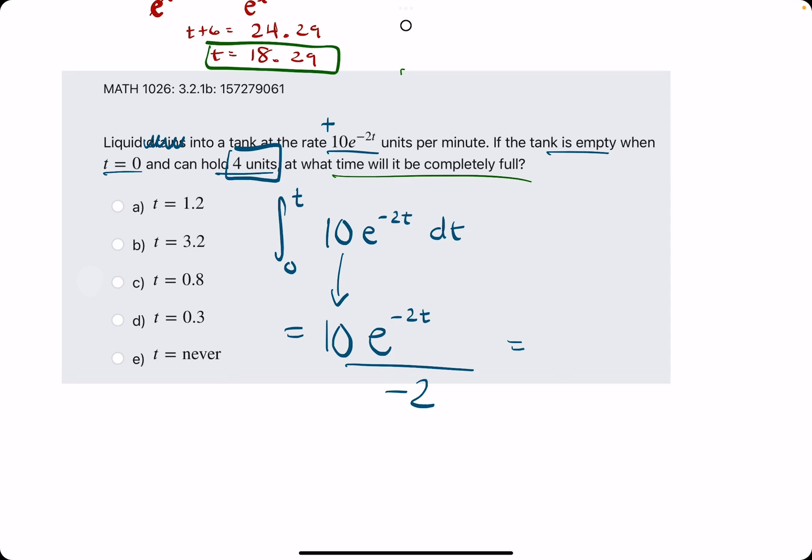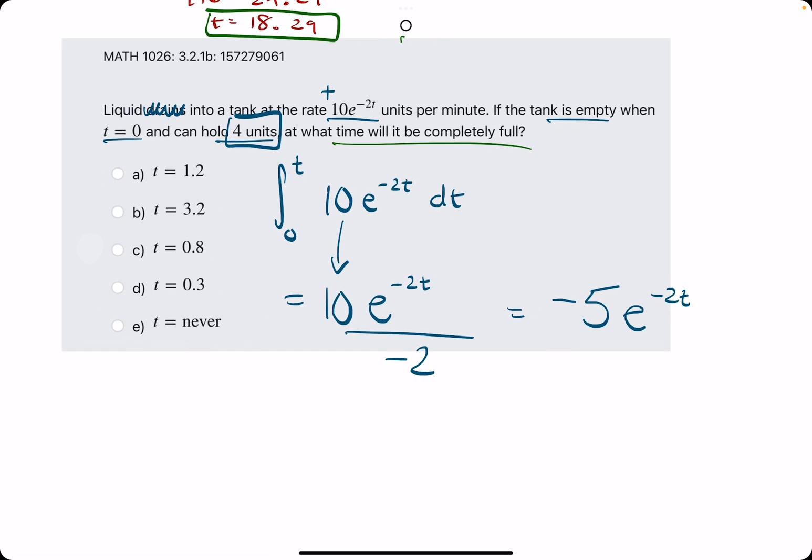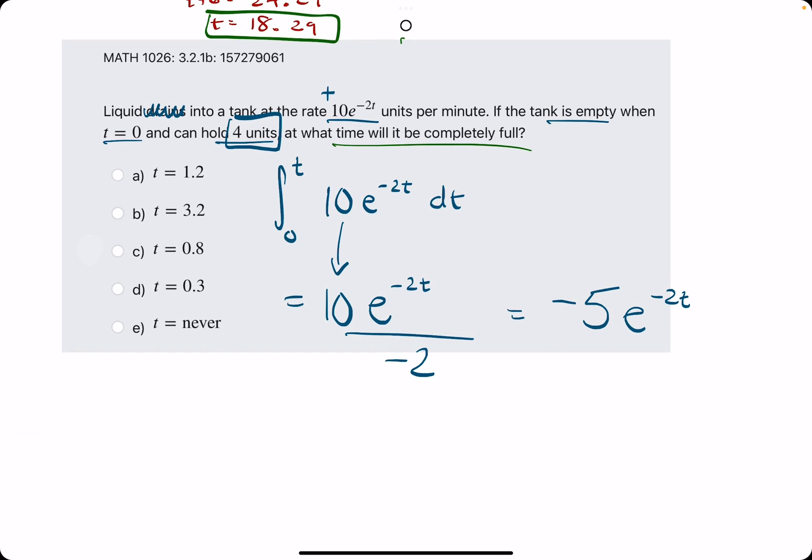The 10 is the coefficient that will always just stay out in front. Anytime you have a coefficient in front of e, just go ahead and leave it out in front. 10 divided by negative 2 is negative 5, so negative 5 e to the negative 2t.